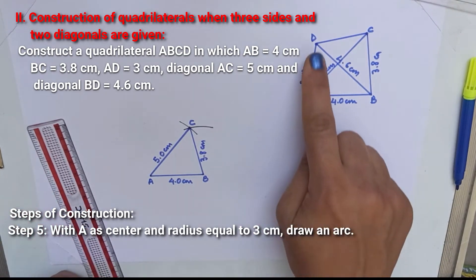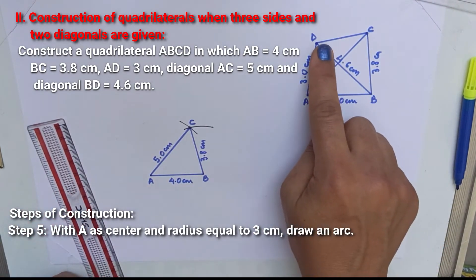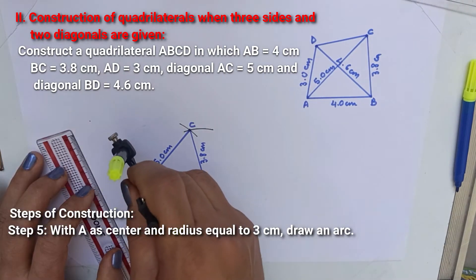To draw triangle ABD, draw AD equal to 3 cm, BD is equal to 4.6 cm.